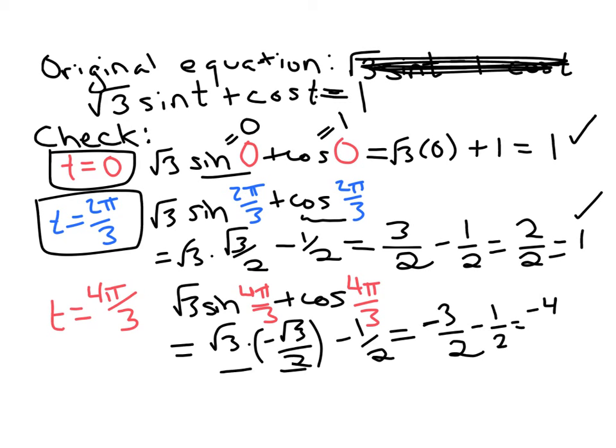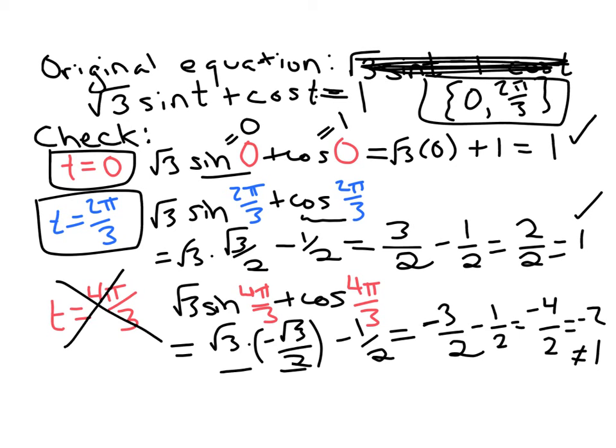So this is equal to -4/2, which is -2, not 1, like we were supposed to get. So this is an extraneous solution. And your solution set to this equation, we finally end up with 0 and 2π/3 as our solutions.